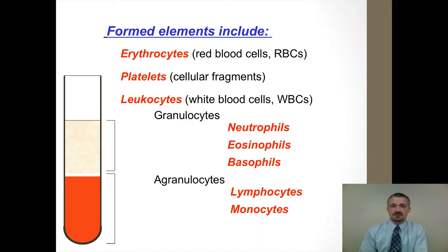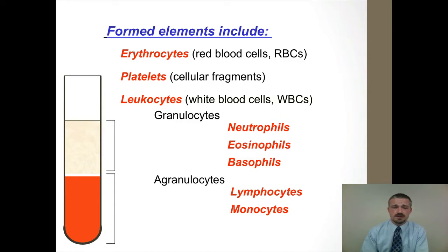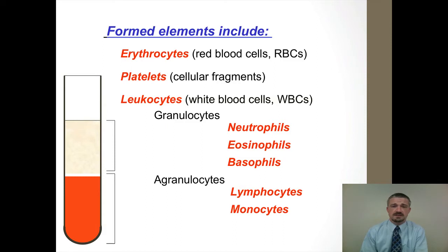We can see in terms of the leukocytes, there are a number of different types, and I will have a show on the white blood cells as well. We'll talk about the different types here, but you have granulocytes, which have grains in the cytoplasm of those cells. These are going to be your neutrophils, basophils, and eosinophils. The agranulocytes do not have these cytoplasmic granules in the cell, and these are going to be the lymphocytes and the monocytes.